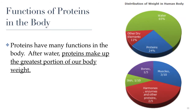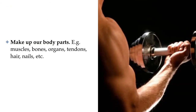Proteins are extremely important to our body. After water, proteins on average make up the greatest portion of our body weight. Basically, most of our body parts and most of our important molecules are made of proteins. Proteins make up our muscles, our bones, our organs, our tendons, our hair, our nails, and pretty much all our body parts are mostly protein.